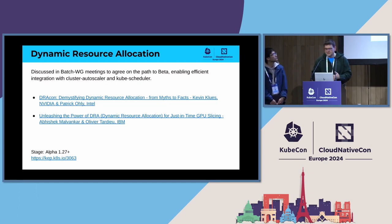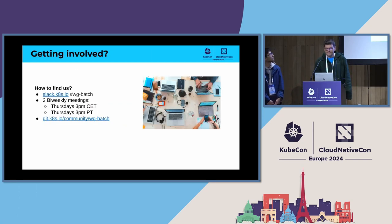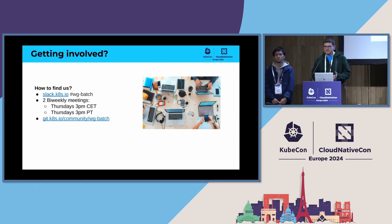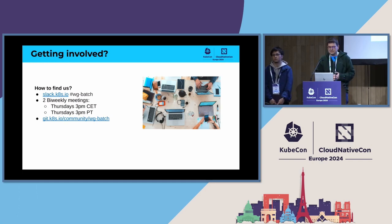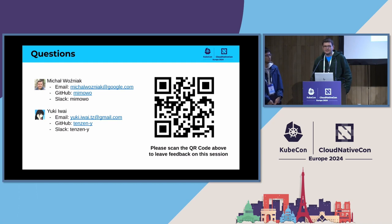As a batch working group, for the last couple of meetings we have been hosting discussions on DRA to discuss the path forward from alpha to beta. The discussions were fruitful on how to integrate cluster autoscaler and kube-scheduler with DRA. If you are interested in what we are doing with any of these projects — JobSet, Kueue, or the Job API itself — we invite you to discuss things on Slack at the Batch Working Group channel or attend our meetings. With that, we are happy to take questions.